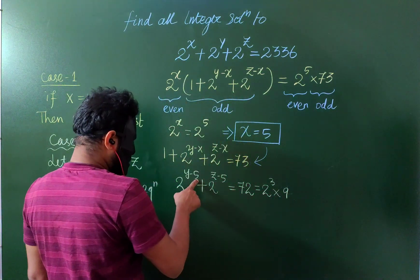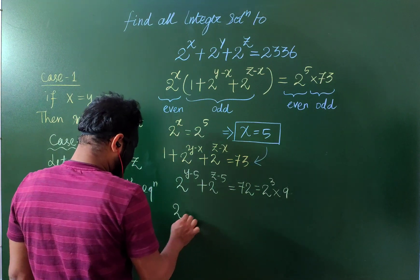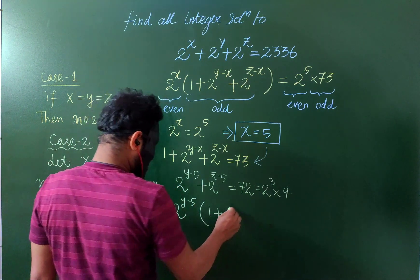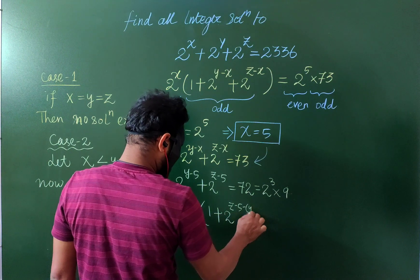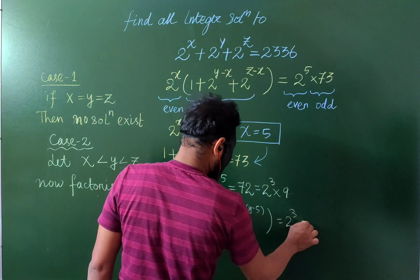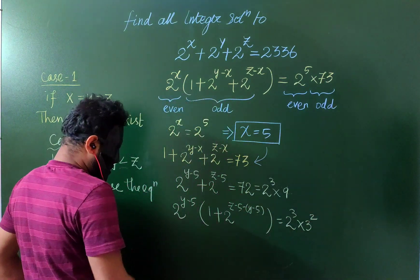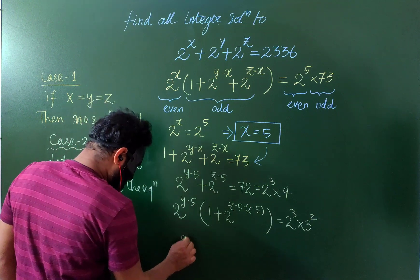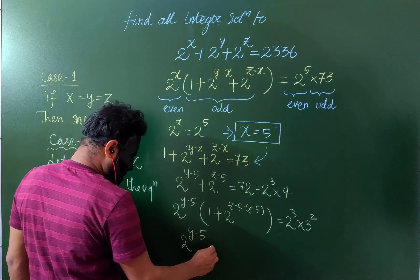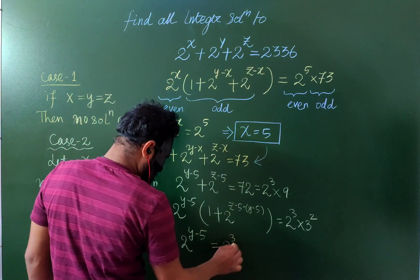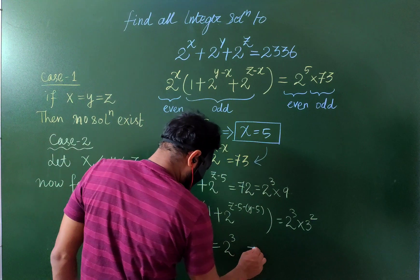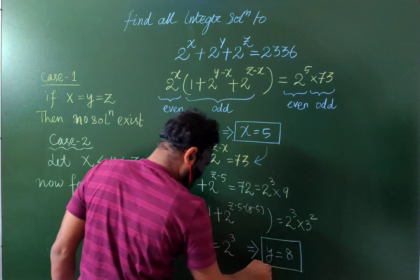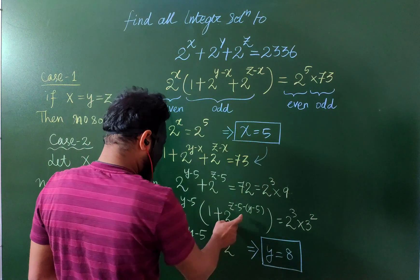Again, this one is smaller than that one, so we can factorize. Again, this is even and this is odd. So we get y minus 5 equals 3, from here we get y equals 8.